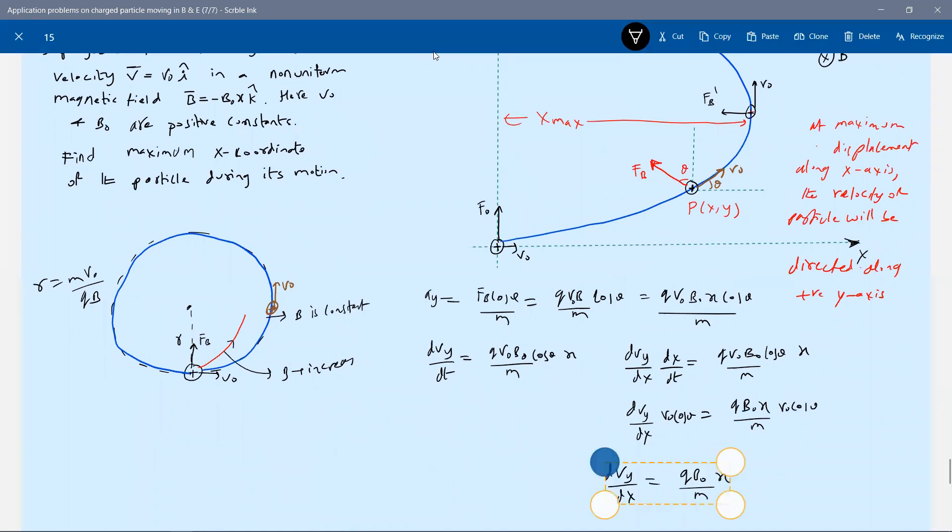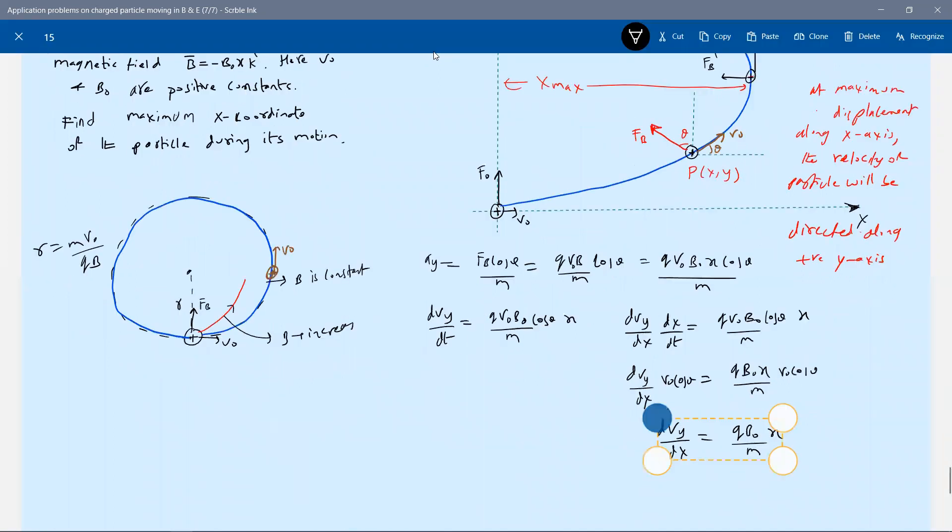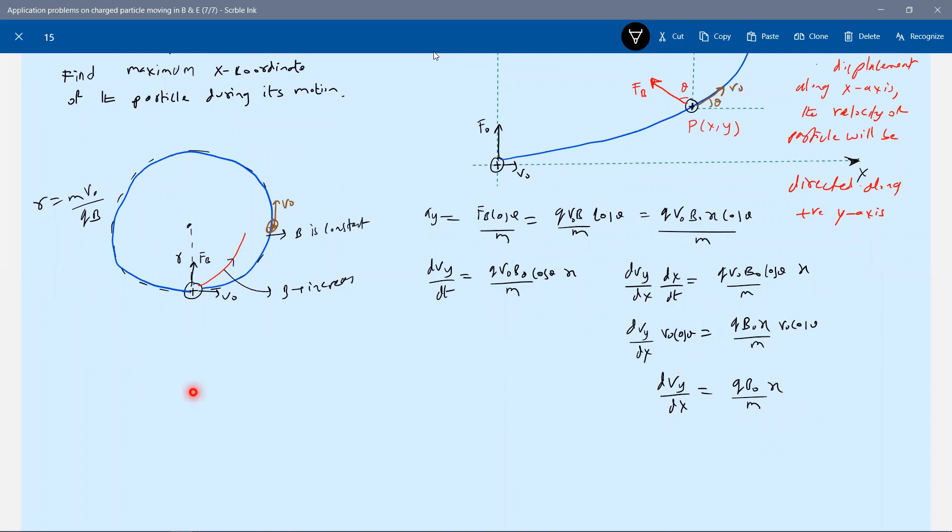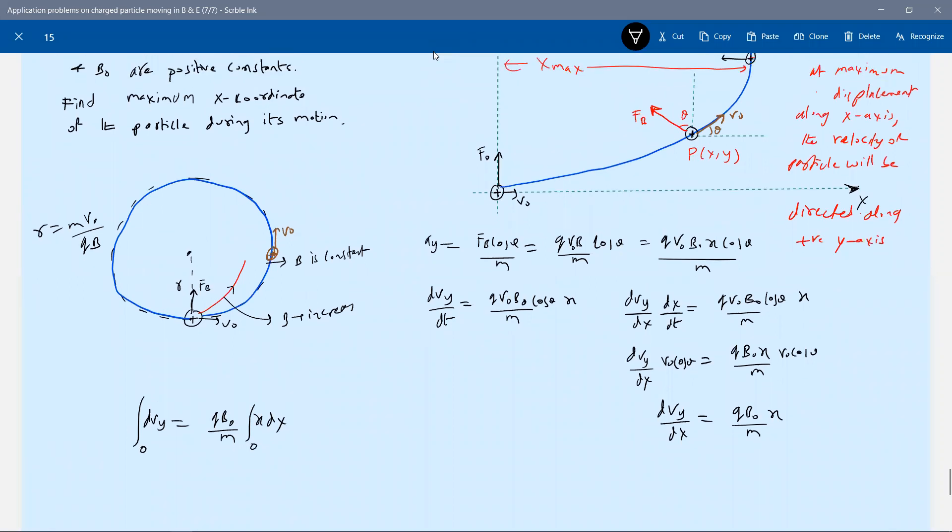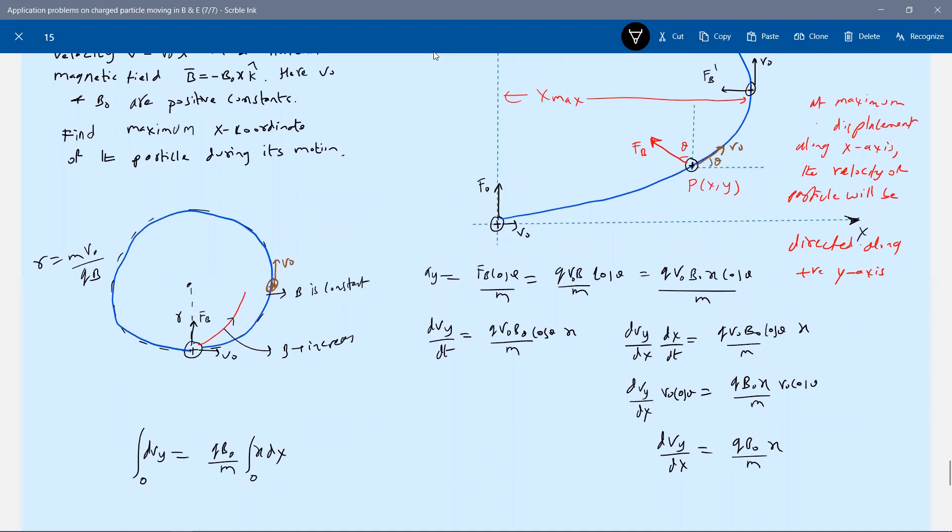Let me write here only. Can we integrate now? Q B naught M X B X. What should be the limit? At X equal to zero, the Y component of velocity is zero. You can see clearly from that. Then at maximum displacement, what is the Y component of velocity is V naught.